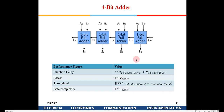Gate complexity means how many modules are used — it gives a rough indication of area but is not a precise figure of merit. At the arithmetic level there is no point computing exact transistor-level area. So we use the number of modules as a proxy. This is what a full adder looks like. Now, we talk about a pipelined 4-bit adder and how it helps.